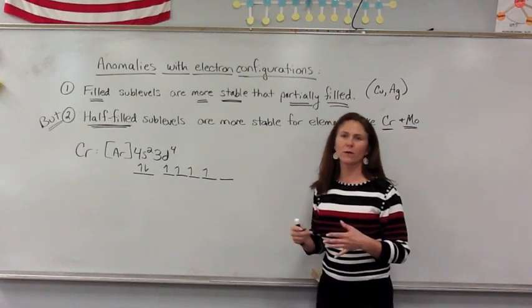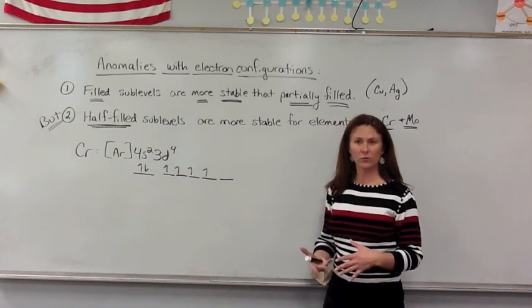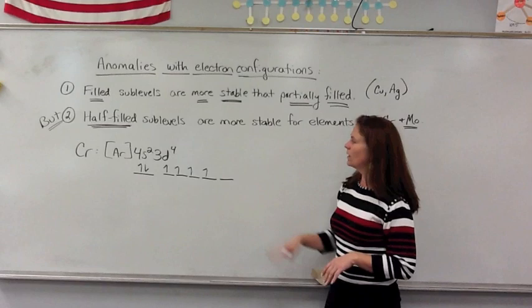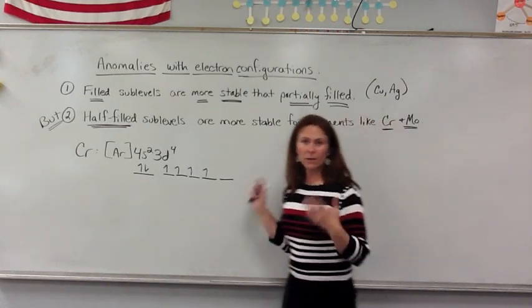Now, the second type of exception to some electron configurations that we see is with chromium and molybdenum.